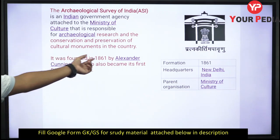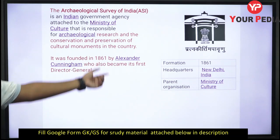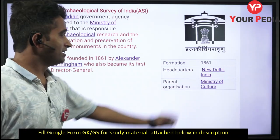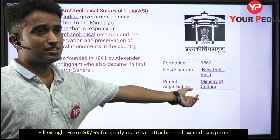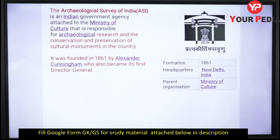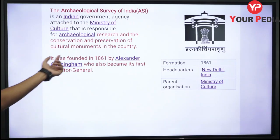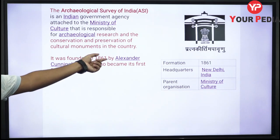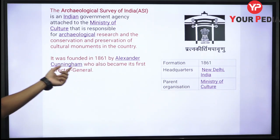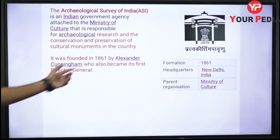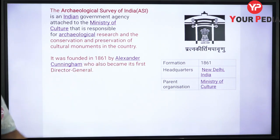ASI was established in 1861 and is headquartered in New Delhi. It is under the Ministry of Culture. It was founded and its first Director General was Alexander Cunningham.